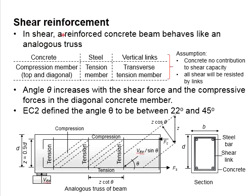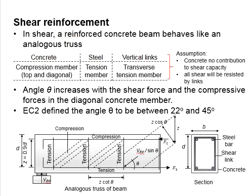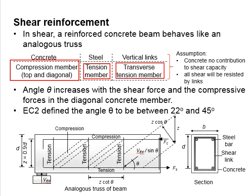The truss comprises three main elements: the concrete, steel, and vertical limbs. The concrete behaves as a compression member, the steel behaves as a tension member, and the transverse tensile member would be the vertical limbs.